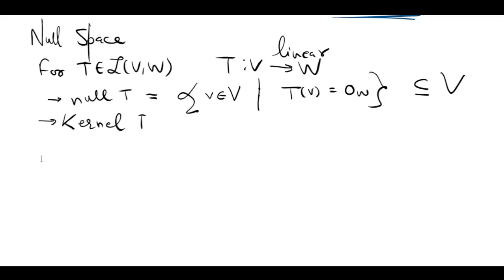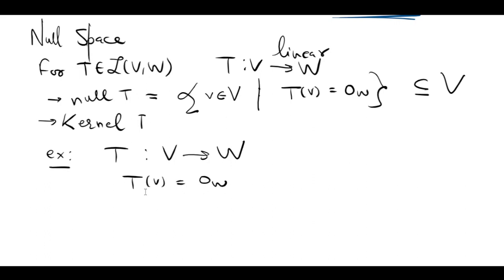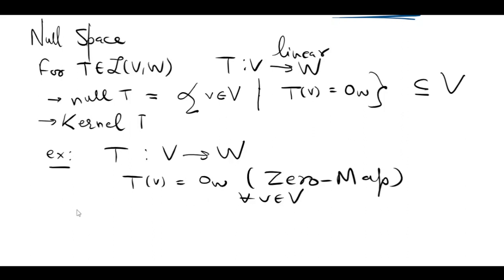For example, suppose T is the zero map from V to W, meaning it maps every vector V to the zero vector of W. If I ask you to find the null space of T, pause the video and try to think about it yourself and answer in the comment section.